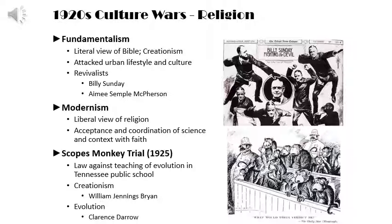The culture wars of the 1920s also had a religious dimension. Fundamentalism — the literal view of the Bible and creationism — attacked urban lifestyle and culture, and revivalists like Billy Sunday and Aimee Semple McPherson saw their followings grow larger by the year. Modernism, which was a liberal view of religion, preached acceptance and the coordination of science within the context of faith.